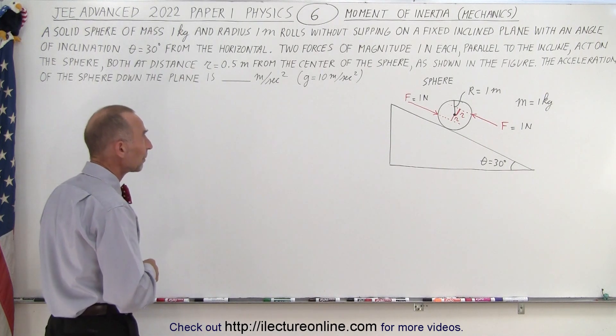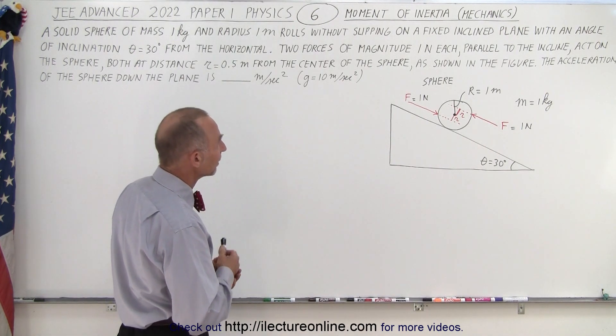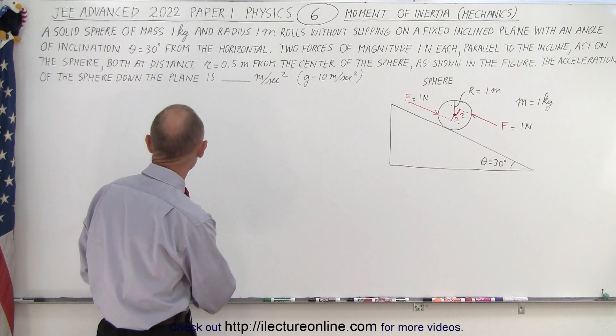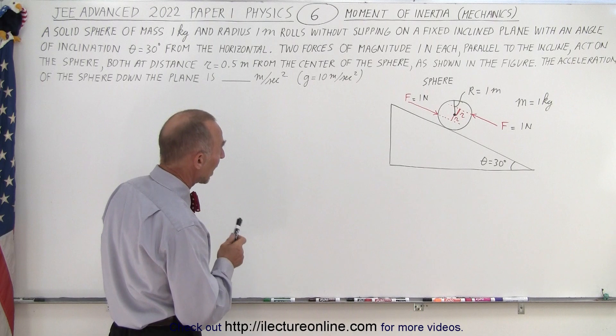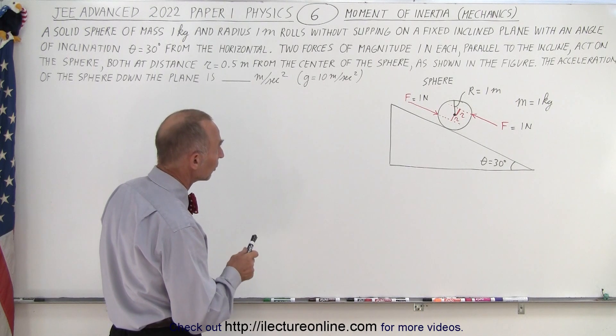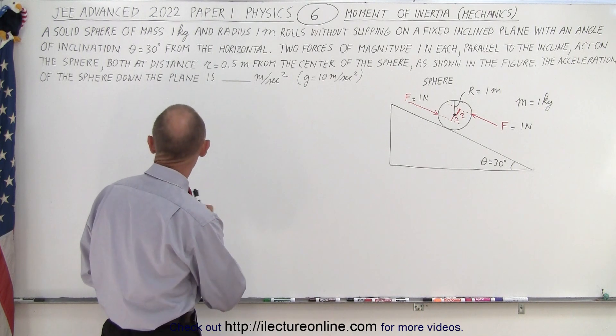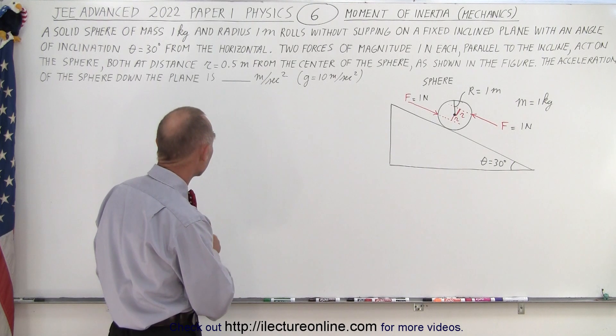rolls without slipping on a fixed inclined plane with an angle of inclination 30 degrees from the horizontal. Two forces of magnitude 1 N each parallel to the incline act on the sphere both at distance